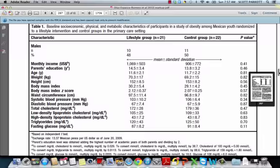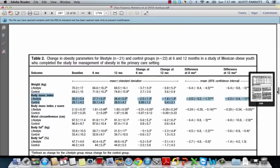We see that table one gives us the baseline measures for both our lifestyle and our control group, but that don't really tell us how the effectiveness, how do these things change? How did the weight change or BMI change in these different groups?